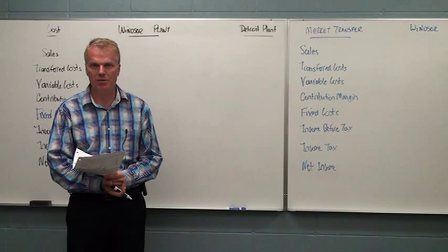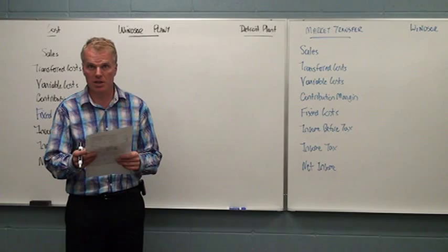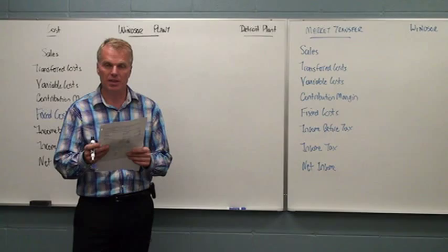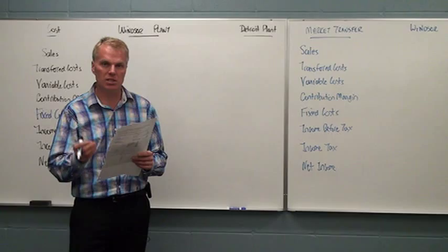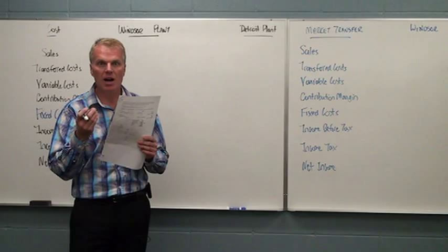So you've had a chance to look at the problem now, Fowler Electronics. They make picture tubes for their televisions in Windsor, Ontario, Canada and then Windsor sends these tubes to Detroit in the United States. The challenge we have here is that the tax rates for these countries are different. So what is the most profitable way for the company to set up its transfer prices so that the company can keep more money after taxes?